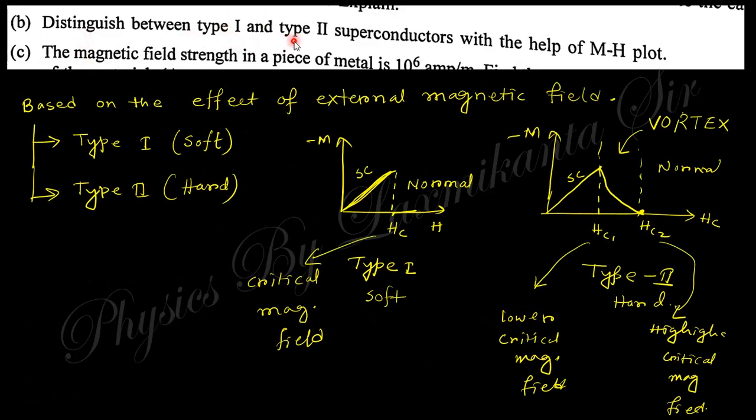Next question: distinguish between type 1 and type 2 superconductors with the help of M-H plot. In superconductors, there are two types: type 1 and type 2. Type 1 is known as soft, type 2 is known as hard. If you plot this M-H curve for type 1, this is the superconducting state and this is the normal state. In case of type 2, between the superconducting and normal state, there is a vortex state. This is the hard type superconductor. That's why the transition needs a vortex state, that means a mixture state. This is the lower critical magnetic field.